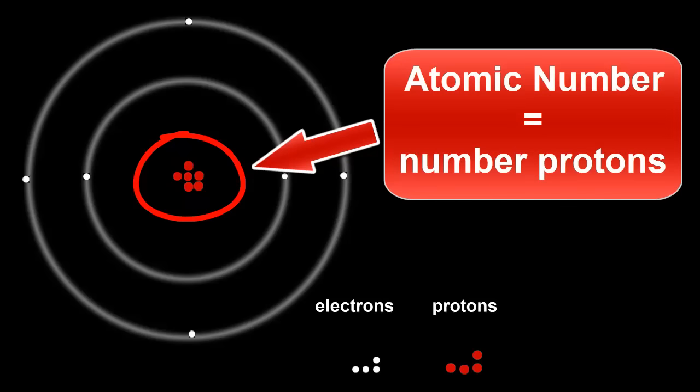It means that an atom's identity, that is, whether it is hydrogen, or aluminum, or gold, depends only on how many protons are in its nucleus. The atomic number of an atom is equal to the number of protons in its nucleus.